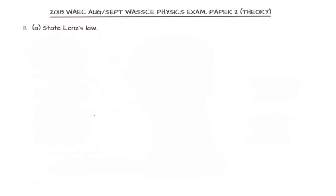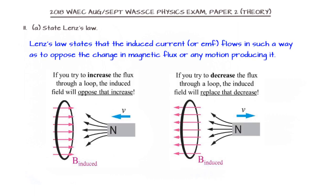We are asked to state Lenz's law. Lenz's law states that the induced current or EMF flows in such a way as to oppose the change in magnetic flux or any motion producing it. As shown in the diagram, if the motion causing the EMF is in a particular direction, the flux will flow in the other direction. This law is used in electromagnetic induction and many other applications.